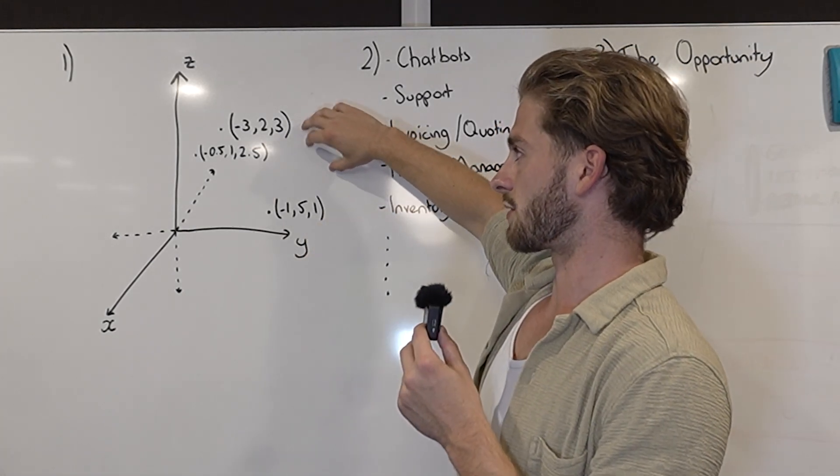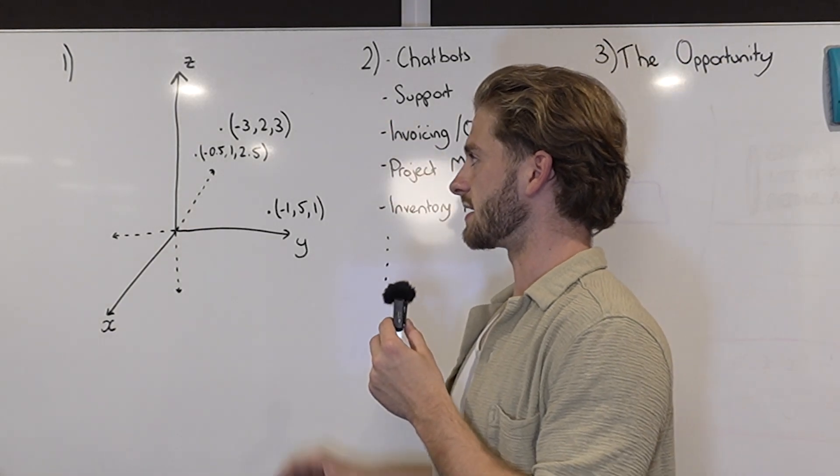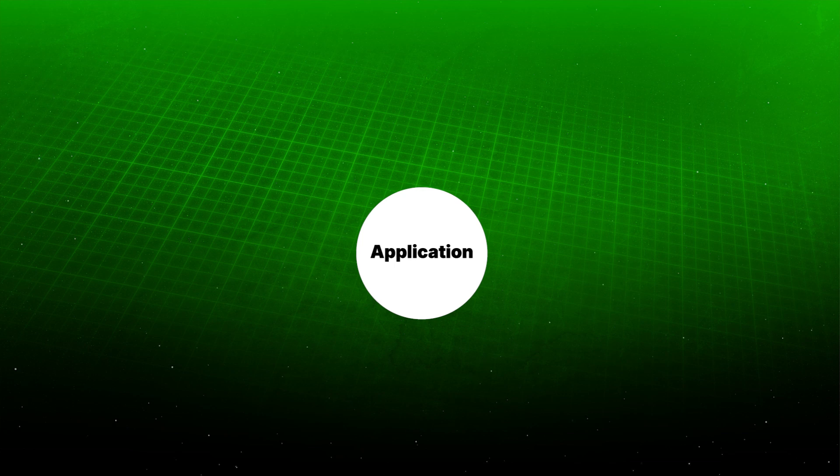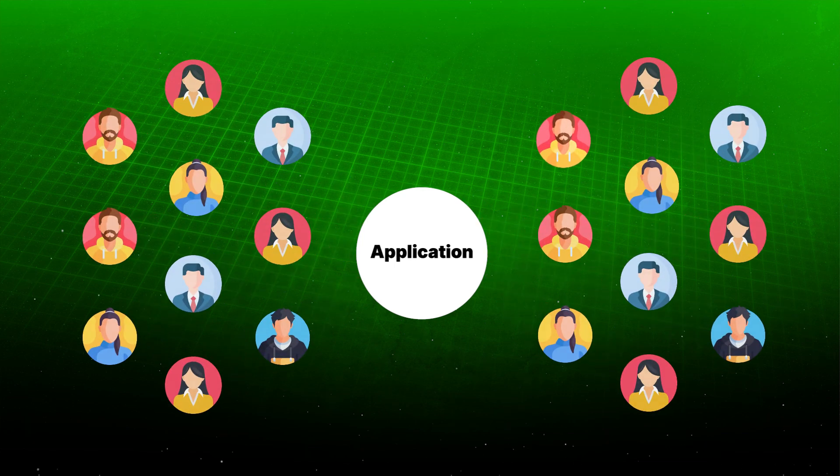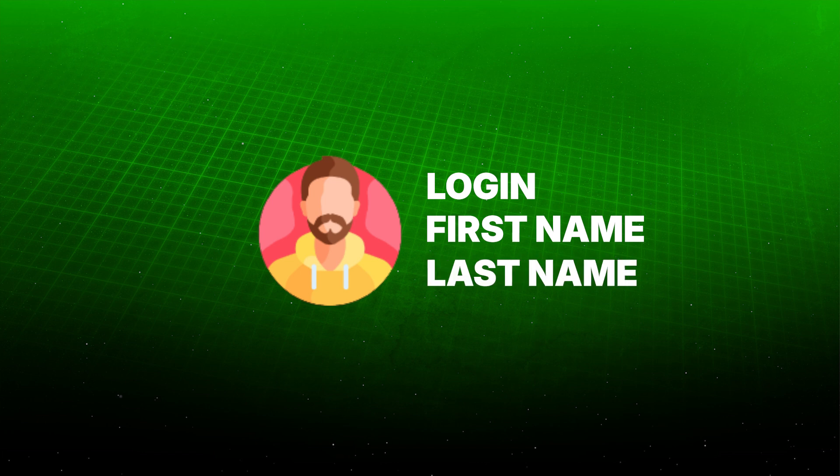So in this example here I've plotted three different coordinates. The way the vector database works is instead of searching through massive tables of data, if you think about an application that has a hundred thousand users and we want to find one user when they log in.